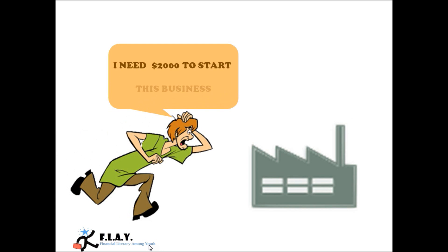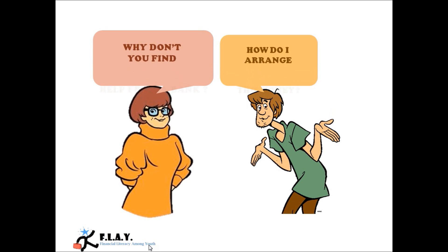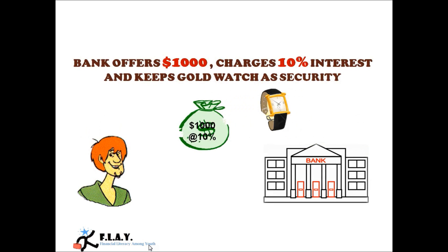John wanted to start some business. He needed $2000 for the same. When he checked his reserves and savings, he found out that he has got only $1000. He approaches his friend Smurf and asks her how do I arrange the rest of the money. Smurf was a smart lady and guides him to go to a bank and ask for help. John likes the idea and so he goes to a bank. The bank says yes, we'll give you $1000 but you'll have to pay an extra interest of 10% to us at the end of the year and keep your gold watch as security. John agrees to the conditions and took the $1000 for his business.